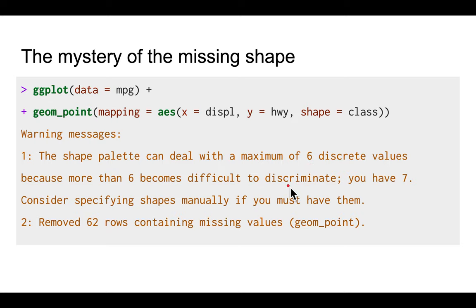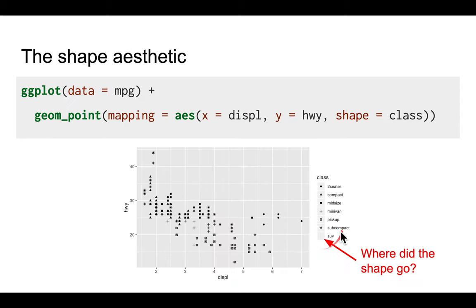So basically, ggplot is kind of opinionated - it tells you that more than six shapes is not a good idea. If you want to do that, you'd better go ahead by yourself manually by setting the shapes.